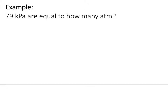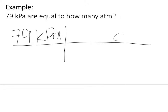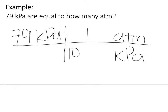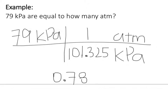Last one — go ahead and try it and then come back. 79 kPa converted to ATM. We use 1 ATM equal to 101.325 kPa. Plug that into your calculator and you get 0.788 ATM.